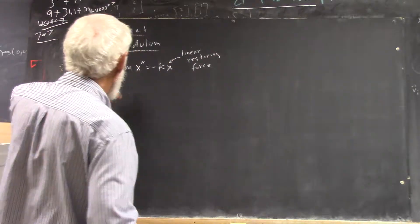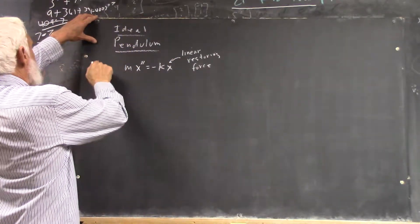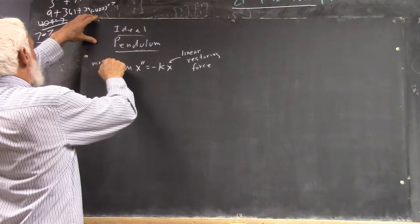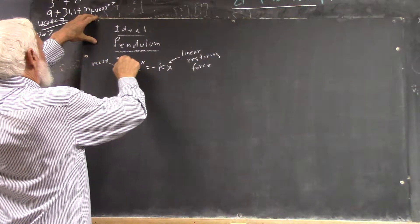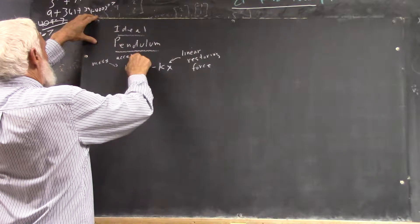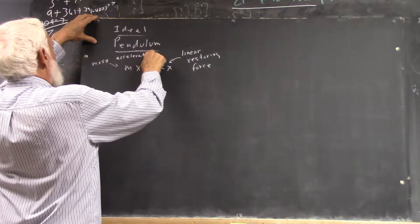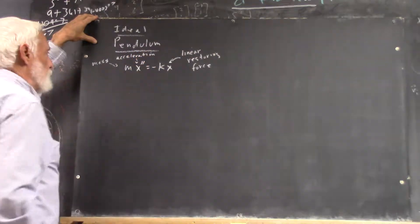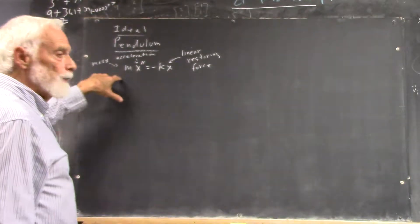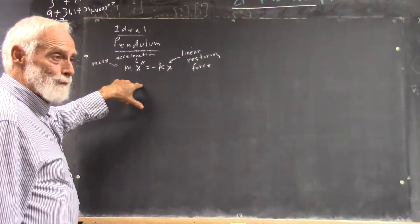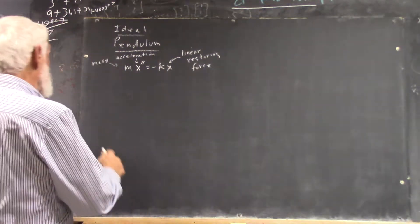A linear restoring force. What we call linear restoring force. This is the mass. X double prime is acceleration. By Newton's second law, the net force is mass times acceleration. So, this is just Newton's second law.